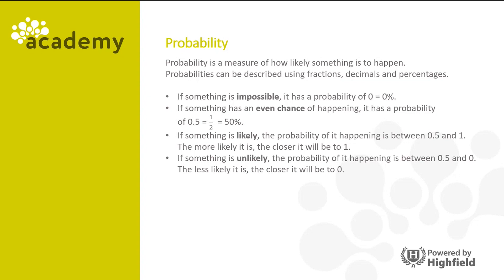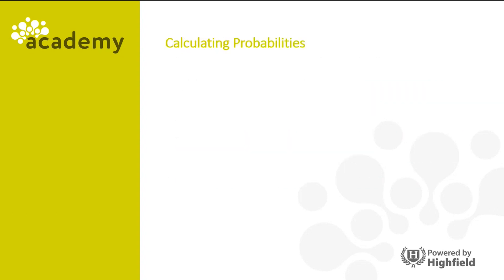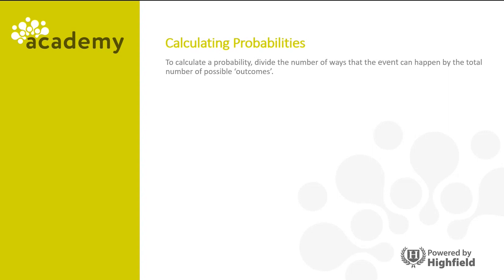If something is unlikely, the probability of it happening is between 0.5 and 0, and the less likely it is, the closer to 0 it will be. If something is certain, the probability of it happening is 1, or 100%. To calculate the probability, divide the number of ways that the event can happen by the total number of possible outcomes. And here's the equation.